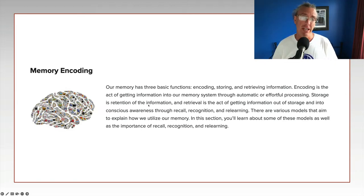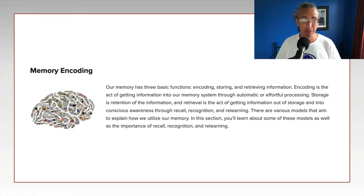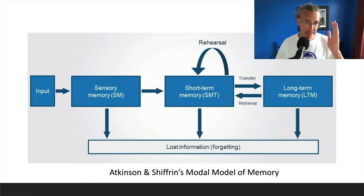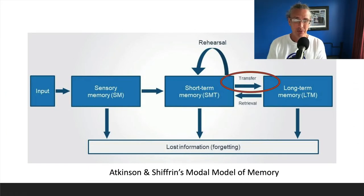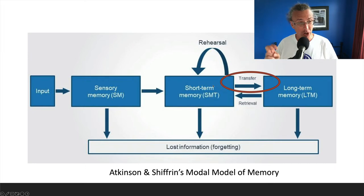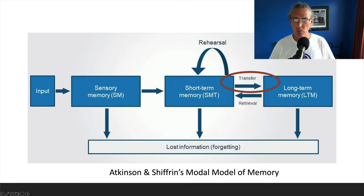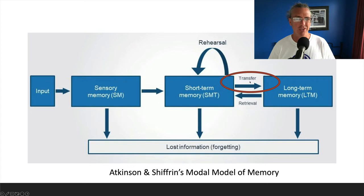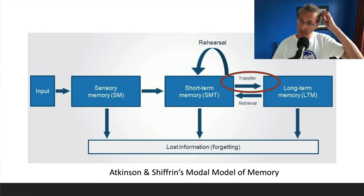Just to follow through: storage is the retention of the information, and retrieval is the act of getting the information out of storage and back into conscious awareness — aka working memory — through recall, recognition, and relearning. We're really going to focus on encoding here. What we often try to do when we memorize something is get it from short-term memory — we're experiencing it now — and store it in a way that makes it available later. That's what we're calling encoding.